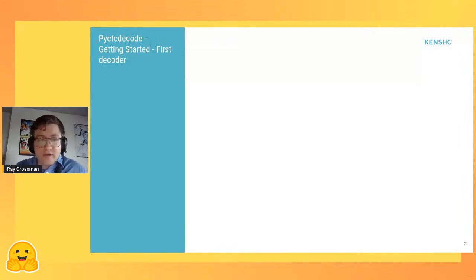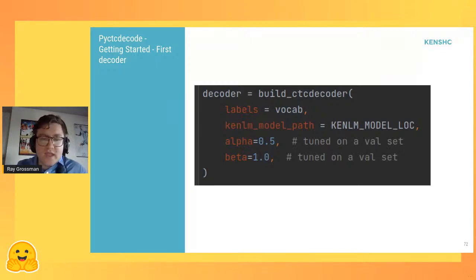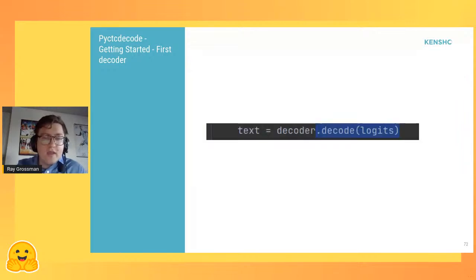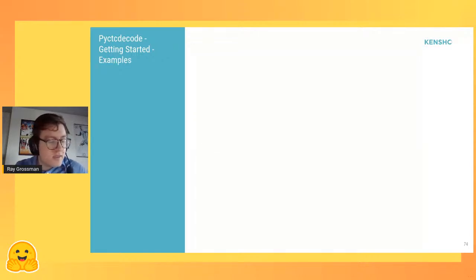Once you have all these pieces, you can get started by making a decoder. It's a simple call to build_ctc_decoder, and you only have to pass it the vocab and your KenLM model. Then once you have your decoder, you can decode a logit matrix simply by using a call to .decode.